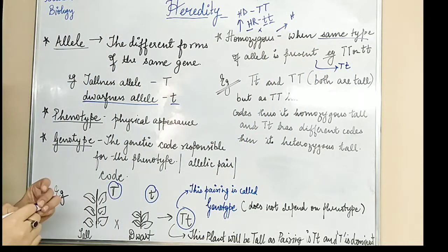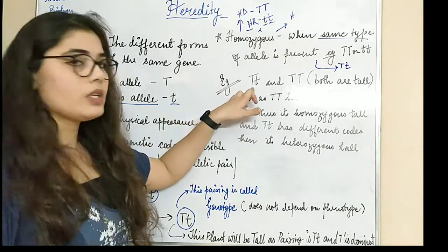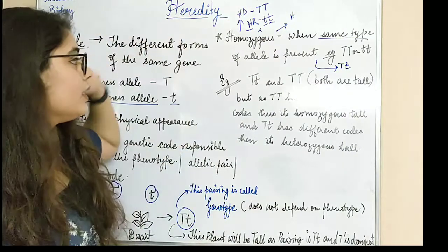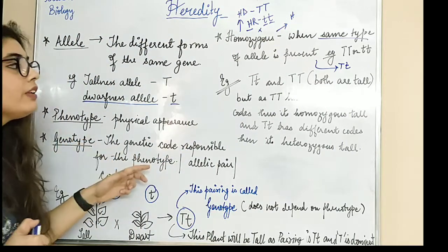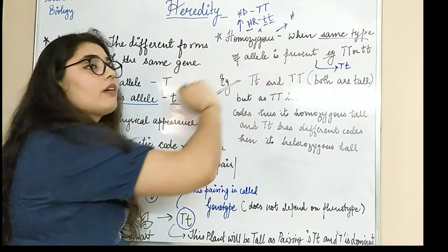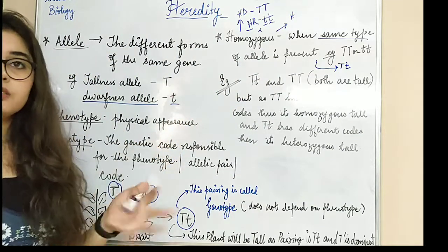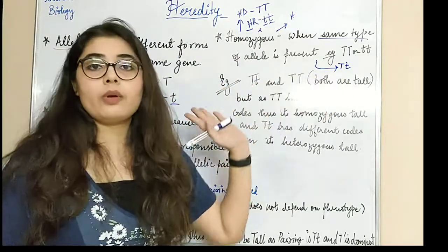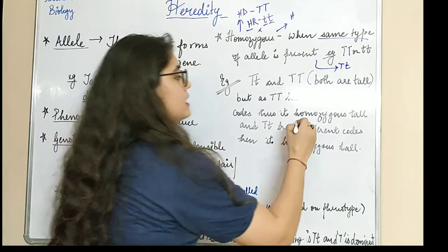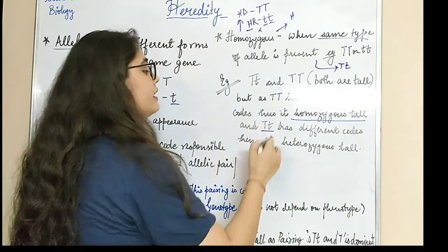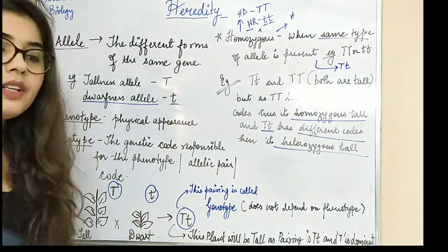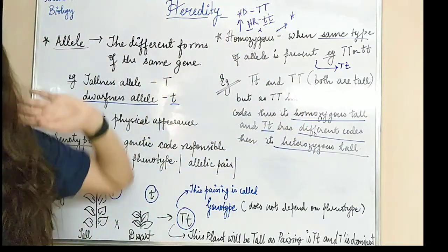Now looking at the examples: capital T, small t — and capital T, capital T — both are tall. As I explained in the previous video, in both cases capital T is present, so dominant shows in both. Now, capital T, capital T has both same codes, thus it is homozygous tall; and capital T, small t has different codes, so it is heterozygous tall.